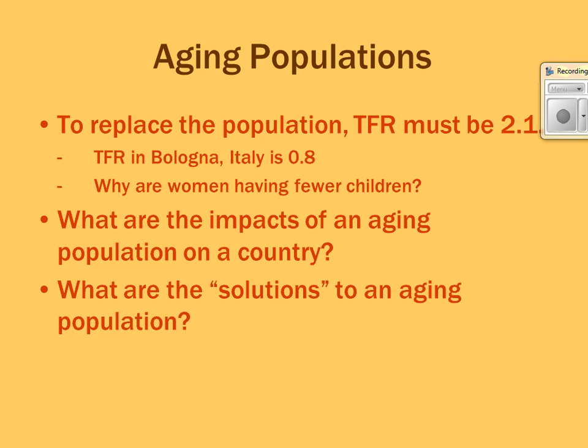Some solutions include encouraging people to have babies through monetary incentives or paid maternity leave. Russia has a 'conception day' encouraging couples to conceive. These don't work very well since people focused on careers won't change for minor financial incentives. Other options: increase taxes to support the elderly, raise the retirement age, or increase immigration — encouraging working-age adults to move in and contribute to the economy.